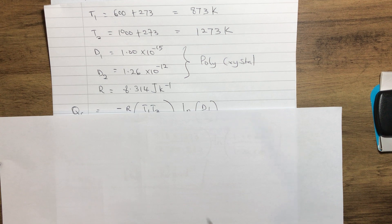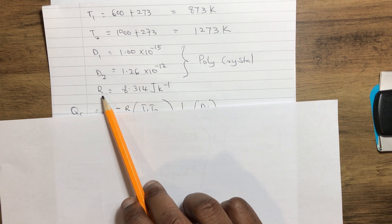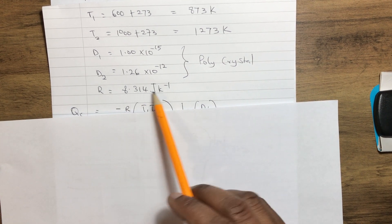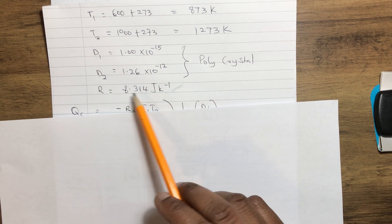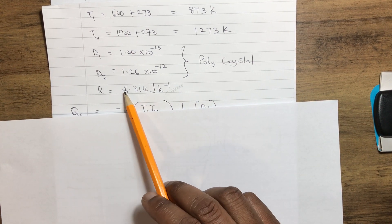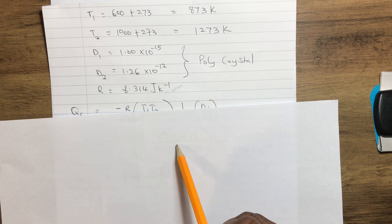From there, we have our gas constant, which is always a given parameter: 8.314 joules per Kelvin.